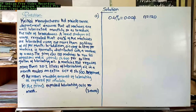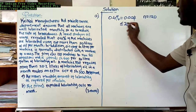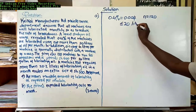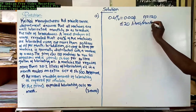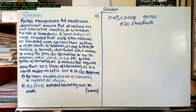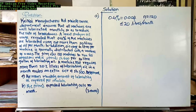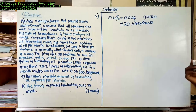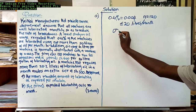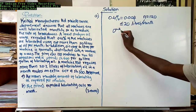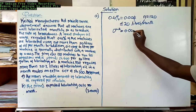0.4 percent of the machines are lubricated using not more than 20 liters — not more than 20 means less than or equal to 20 liters of oil per month. Oil usage in liters per machine is normally distributed, meaning we will make use of normal standard tables. We also have the variance: sigma squared is equal to 0.0025.